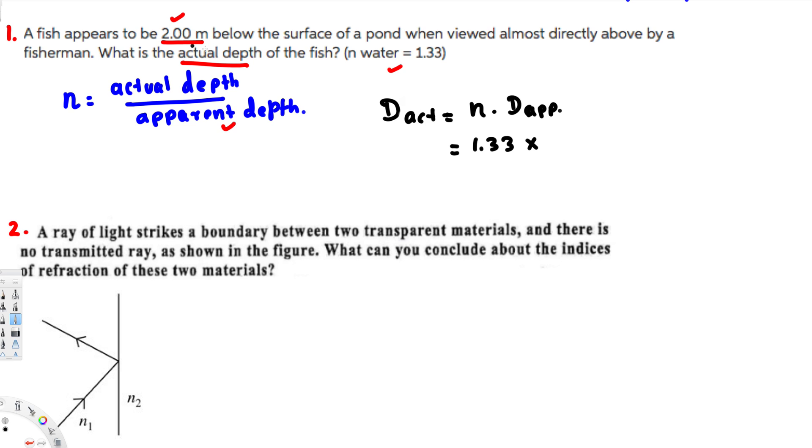So n is 1.33, 1.33 times apparent depth, that is two meters. And if you multiply this one by two, that's going to give you 2.66 meters. So that's going to be the answer for this question.